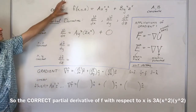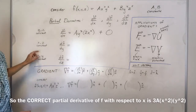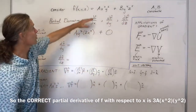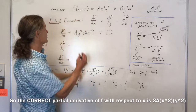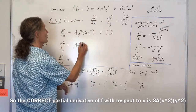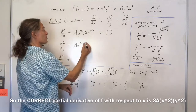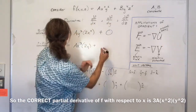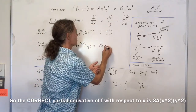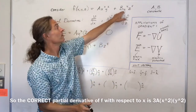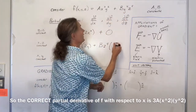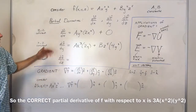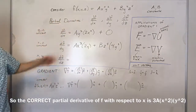We can now take the partial derivative of f with respect to y. We treat x and z as constants. For the first term, a and x cubed are constants, and the derivative of y squared with respect to y is 2y. For the second term, b and z to the fifth are constants, and the derivative of y to the fourth with respect to y is 4y cubed. That is the partial derivative of f with respect to y.